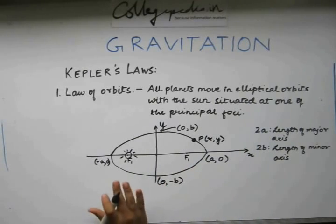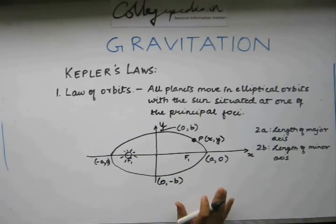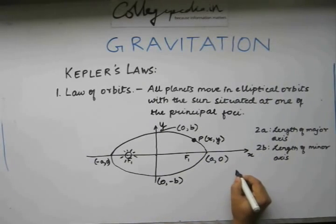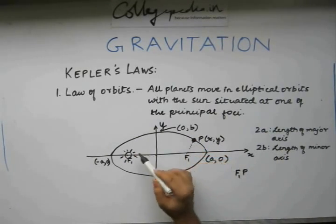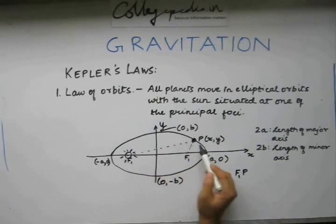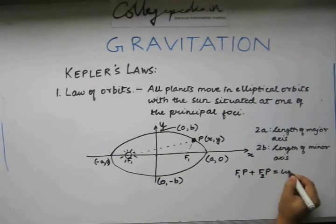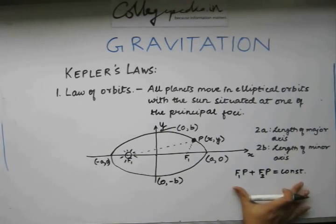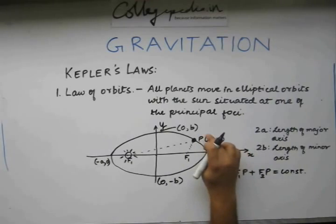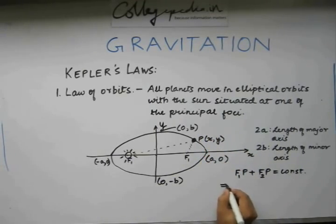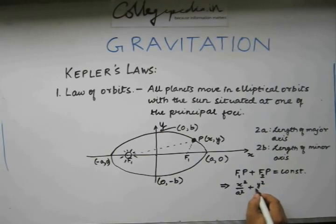An ellipse is defined by the fact that the distance f1p, this distance, plus this distance, the sum of these two distances must be a constant at all times. Solving this equation for these variables x and y, we would see that the equation of ellipse that we get is of this form. This is the most basic part of our discussion.